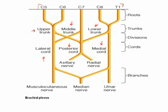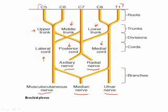The posterior cord splits off into the major extensor nerves of the limb: the axillary nerve and the radial nerve. Therefore, a posterior cord lesion will cause problems with extension. These are part of the last segment — the branches. The others come off the lateral and medial cords and form the musculocutaneous, median, and ulnar nerves. You can remember the order of the levels with the acronym Randy Travis Drinks Cold Beer for roots, trunks, divisions, cords, and branches.